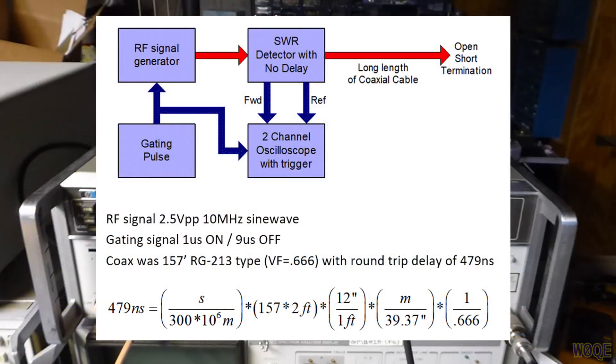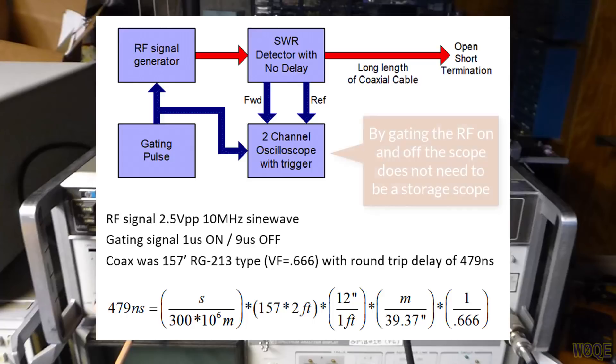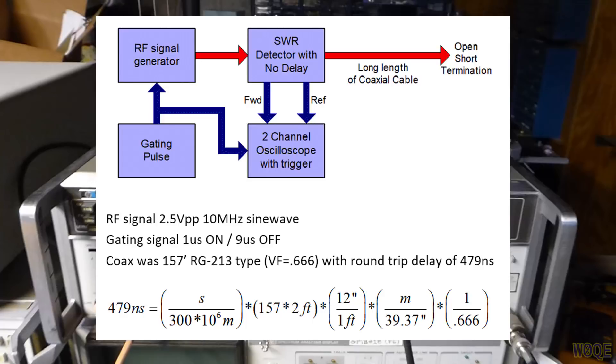The block diagram of the circuit we're going to use for the experiment is shown here. It consists of an RF signal generator. It does not need to be very much power at all, just enough that an SWR detector can detect the forward and reflected power. We need to be able to turn this signal generator off and on quickly, so we need some kind of a pulse generator, and we need an oscilloscope. In addition, we need a long enough piece of coaxial cable that we're capable of seeing the forward and reflected signals being separate in time.